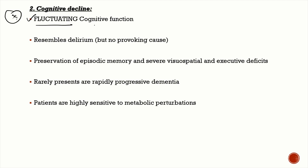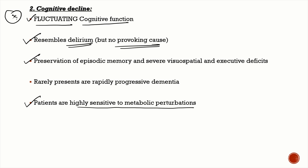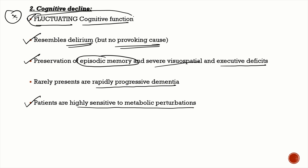Regarding cognitive decline: very importantly, the patient has fluctuating sensorium or fluctuating cognitive function — sometimes we might even mistake the patient for having delirium, but without any provoking cause. Patients are highly sensitive to metabolic perturbations. They have relatively preserved episodic memory with severe visuospatial and executive deficits. Rarely, patients can present as rapidly progressive dementia.